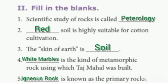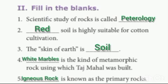Red soil. 3rd question: the skin of earth is called soil. 4th question: the kind of metallic rock using which Taj Mahal was built is white marble. That is known as primary rock — igneous rock.